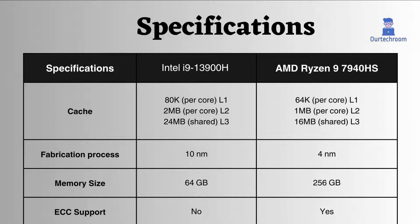This AMD Ryzen is a suitable choice for critical systems due to its ECC support, and it offers a larger memory size compared to the Intel i9-13900H. This Ryzen processor can support up to 256GB of RAM, while this Intel i9 processor can only support up to 64GB of RAM. This means that the Ryzen processor has a significant advantage in terms of RAM support.